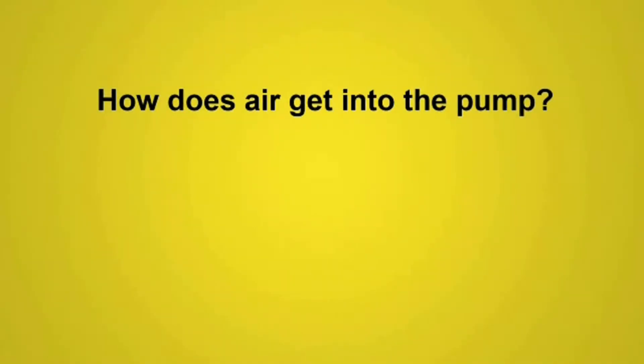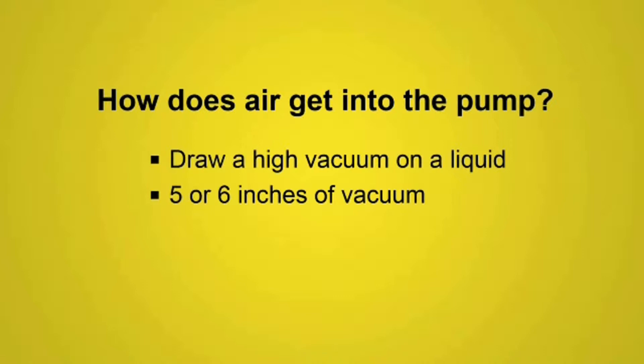How does air get into the pump? On a single-pipe system, one way is to draw a high vacuum on a liquid, or six inches of vacuum would be considered enough. This outgasses the oil.